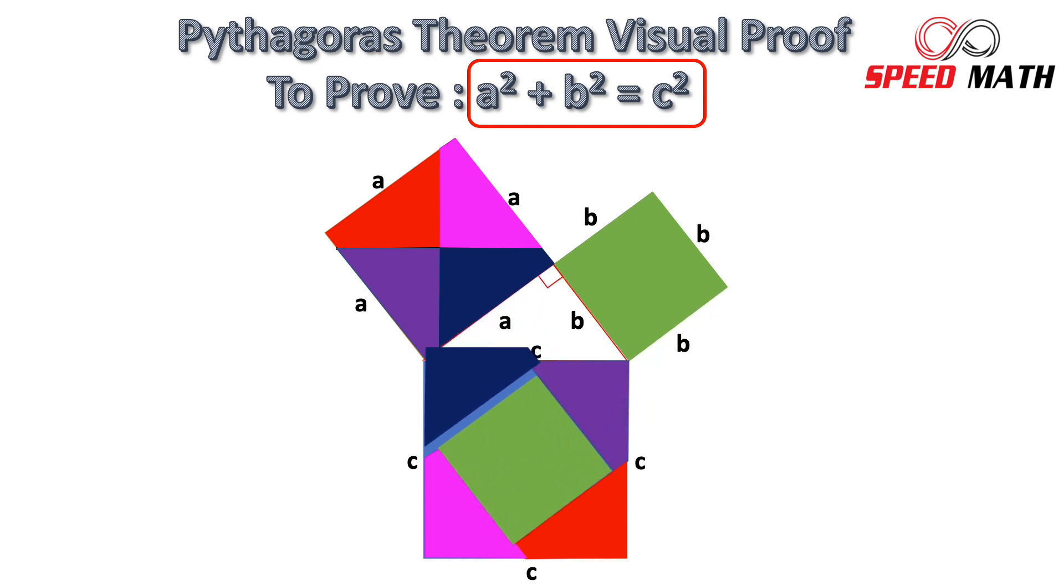You can see that square with side A and square with side B fits snugly into square with side C. So my dear friends, visually we have proved that A square plus B square equal to C square. And this is what Pythagoras visualized 4000 years ago.